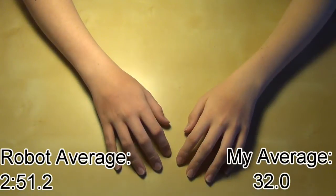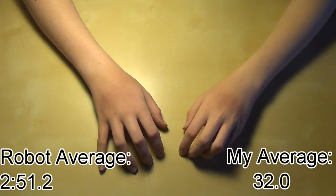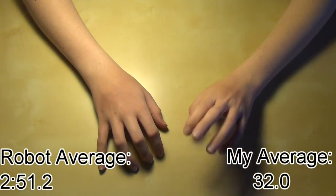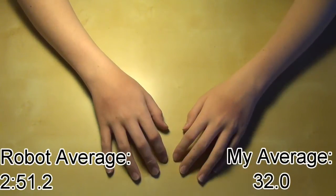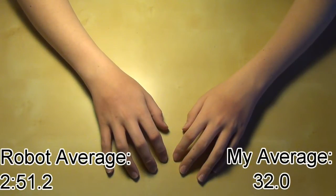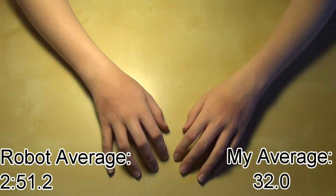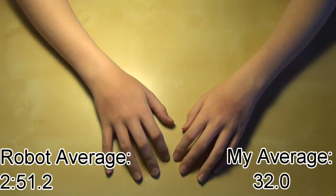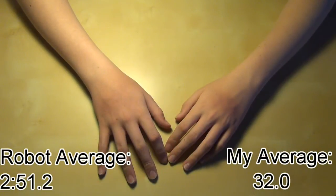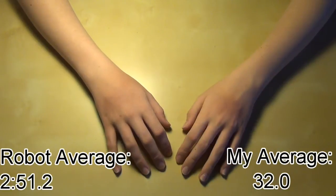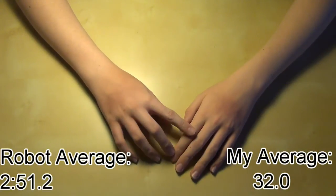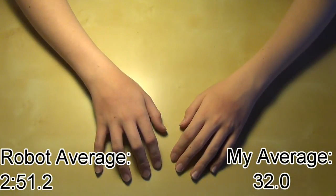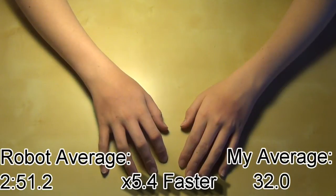Okay, so those were actually some pretty good solves for me. I got an average of 32 seconds, which was really good considering that it was no inspection. The robot on the other hand, it got an average of 2 minutes and 51.2 seconds. And I guess that's good for the robot. It actually did faster than it did in my demo video most of the time because the batteries weren't as low. And so I actually divided the robot's time by my time and I did it 5.4 times faster than it.